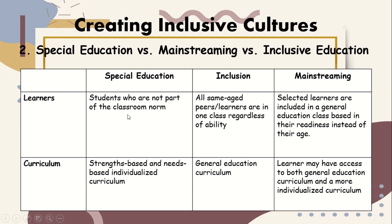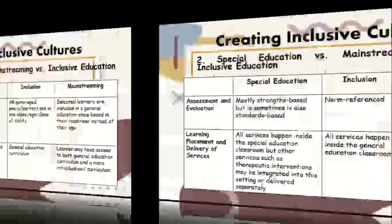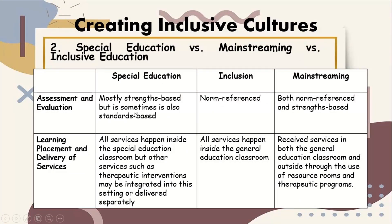In terms of curriculum: in special education, a strengths-based and needs-based individualized curriculum; in inclusion, the general education curriculum; in mainstreaming, the learner may have access to both general education curriculum and a more individualized curriculum. In terms of assessment and evaluation: special education is mostly strengths-based but sometimes also standards-based; inclusion is norm-referenced; mainstreaming uses both norm-referenced and strengths-based. In terms of learning placement and delivery of services: in special education, all services happen inside the special education classroom, though therapeutic interventions may be integrated or delivered separately; in inclusion, all services happen inside the general education classroom; in mainstreaming, students receive services in both the general education classroom and outside through resource rooms and therapeutic programs.